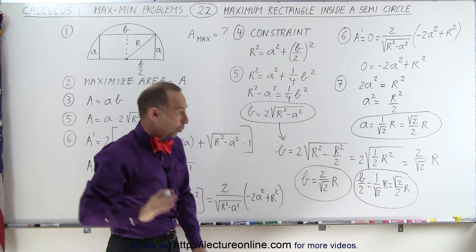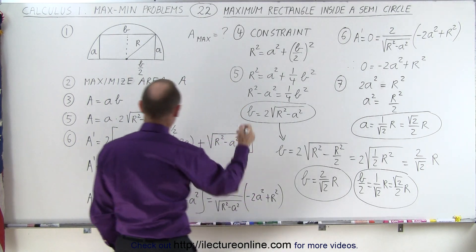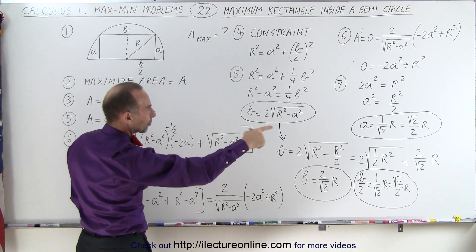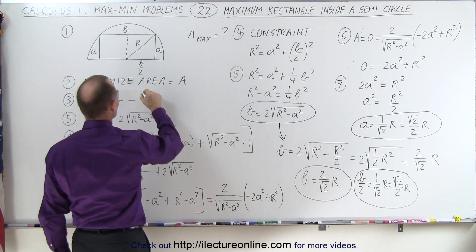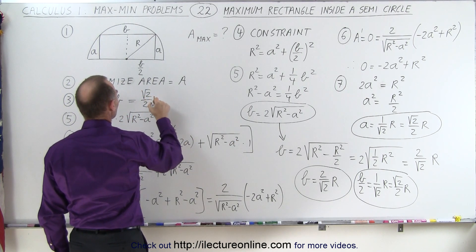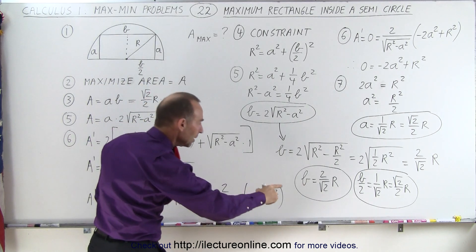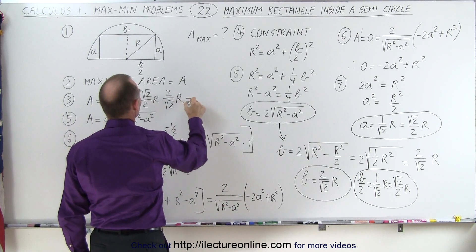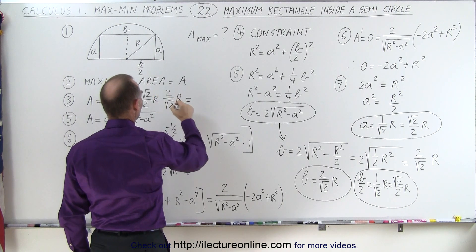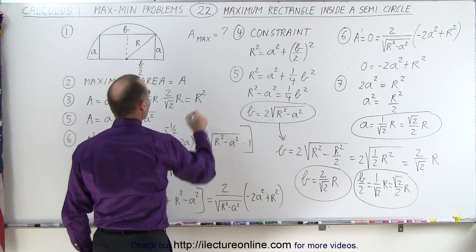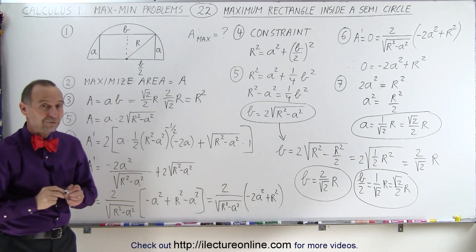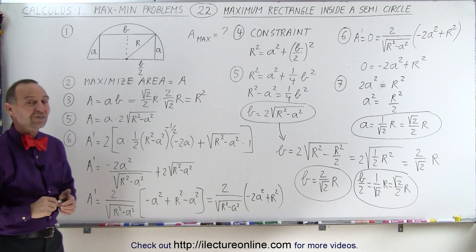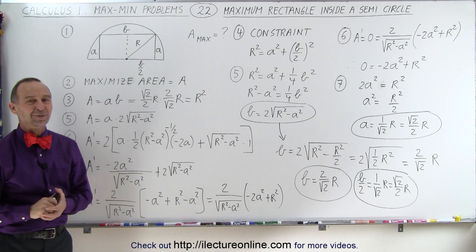To find the total area: area equals A times B, which is the square root of 2 over 2 times R, multiplied by 2 divided by the square root of 2 times R. Of course, those terms cancel out, and we end up with R squared as the total area of the largest rectangle that fits in a semicircle. And that's how it's done.